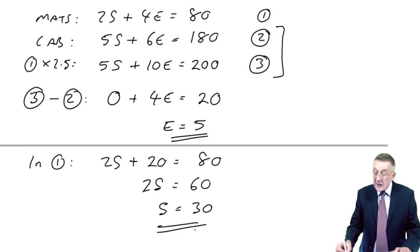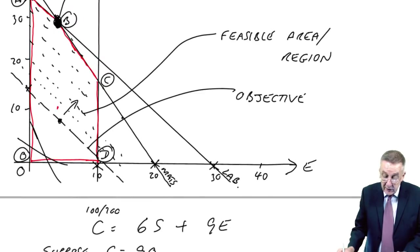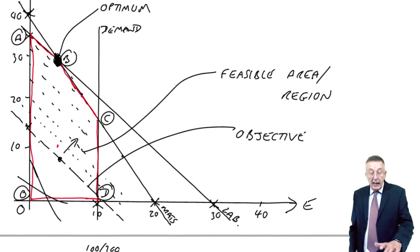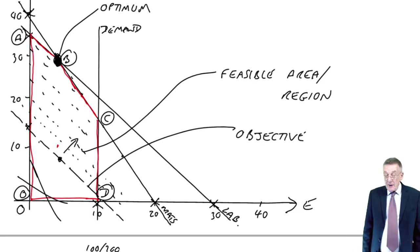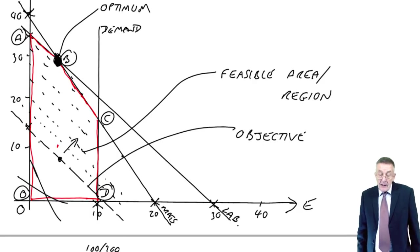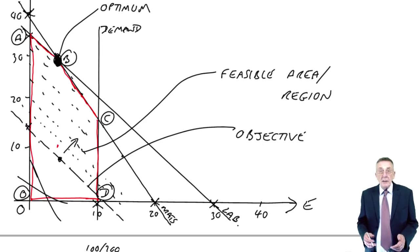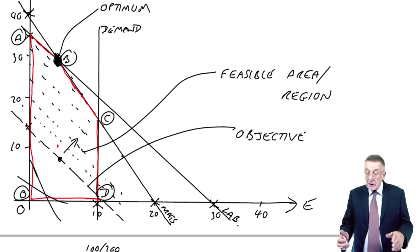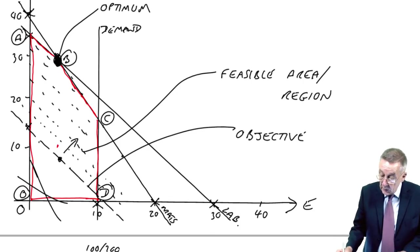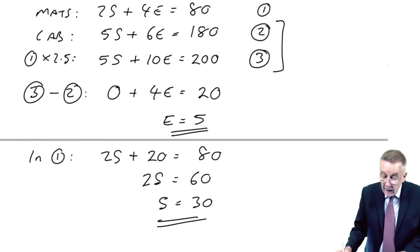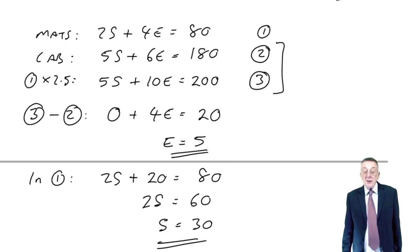And does it seem sensible? I said before, don't read off the graph. But if you look, s did seem to be about 30. E, 5. The graph wasn't accurate. And again, you mustn't read off the graph, whether you've had to prepare one or you're given one. You can be tested on solving the equations. And that could be a little multiple choice question on its own.